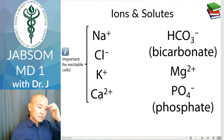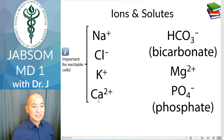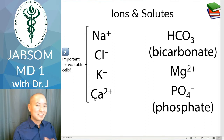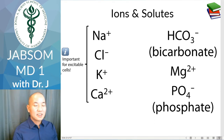These ions are very important for excitable cells — this will come up soon in MD2. Excitable cells, muscle cells, cardiac cells. Now, these ions and solutes are not found in equal concentrations between the inside and the outside of a cell.